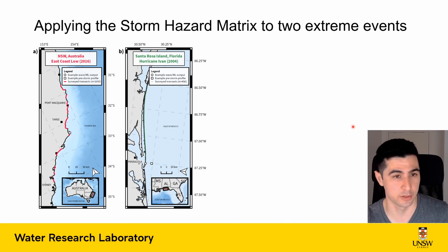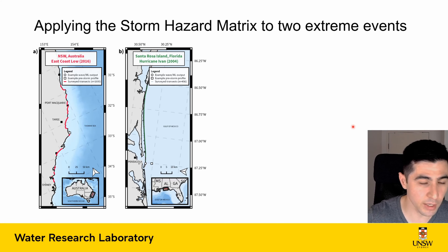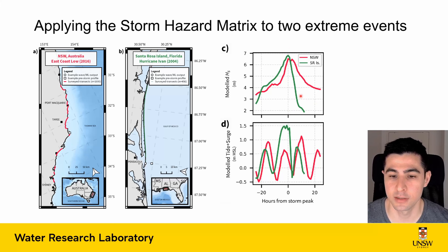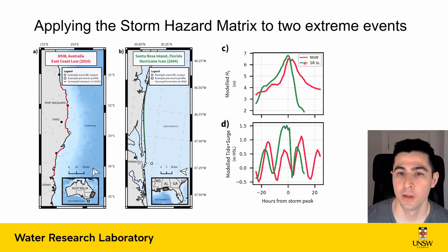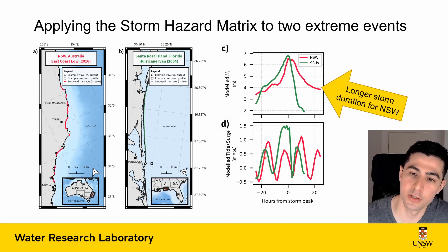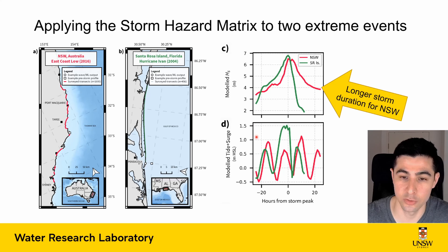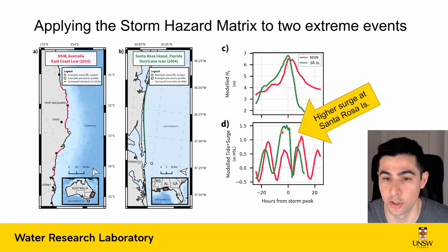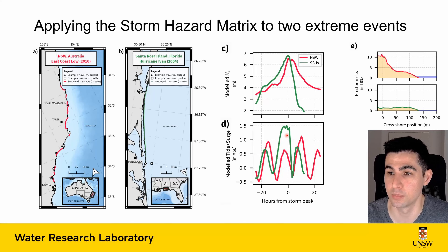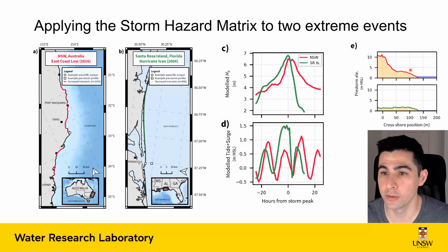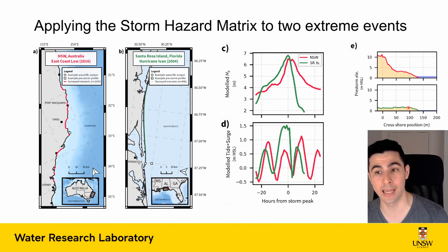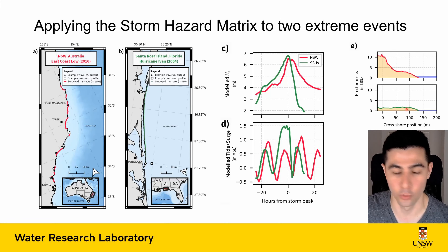We can apply this approach to two different events — one in New South Wales and one in Santa Rosa Island, Florida — which are two very different events. Looking at wave heights over time, the New South Wales event was a much longer duration, so we had much more cumulative wave energy impacting our coastline. In the Santa Rosa Island event, the storm surge was much greater than what the New South Wales coast experienced. Another key difference is the pre-storm topography: New South Wales has a much more substantial dune system, whereas Santa Rosa Island is a low-lying barrier island with less topographic protection.